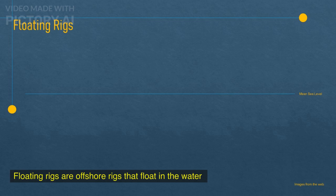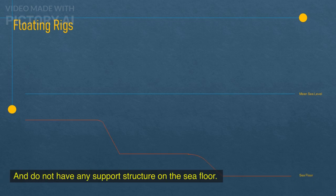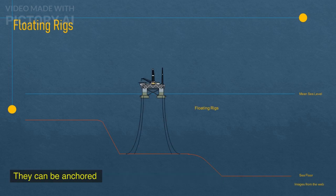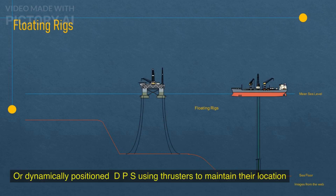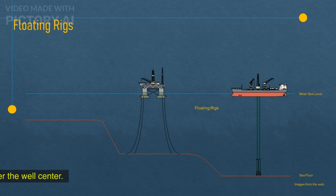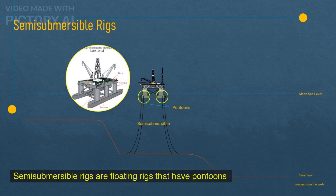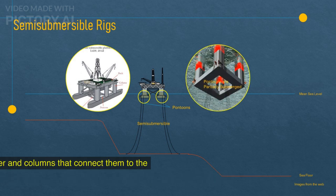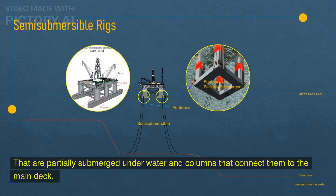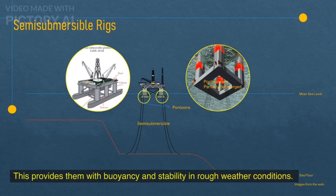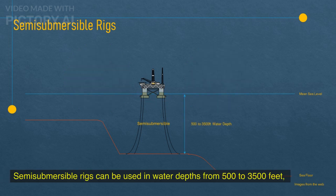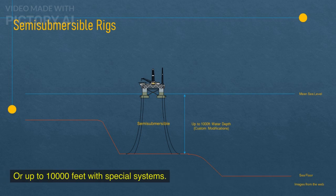Floating rigs are offshore rigs that float in the water and do not have any support structure on the seafloor. They can be anchored or dynamically positioned using thrusters — known as DPS — to maintain their location over the well center. There are two types of floating rigs: semi-submersible rigs and drill ships. Semi-submersible rigs have pontoons that are partially submerged underwater and columns that connect them to the main deck, providing buoyancy and stability in rough weather. Semi-submersible rigs can be used in water depths from 500 to 3,500 feet, or up to 10,000 feet with special systems.